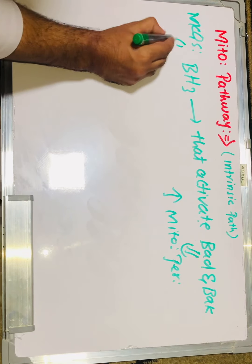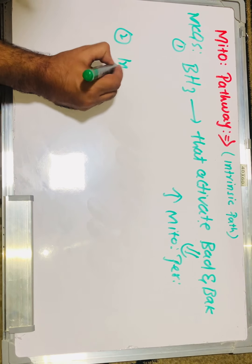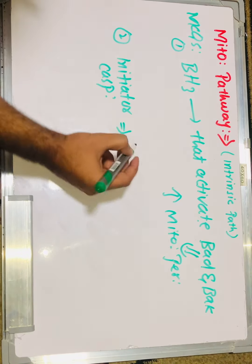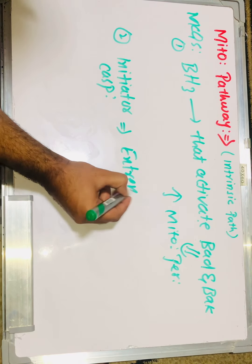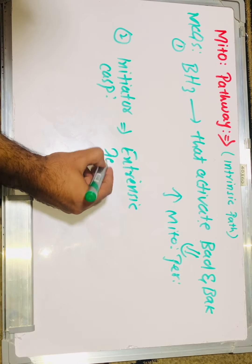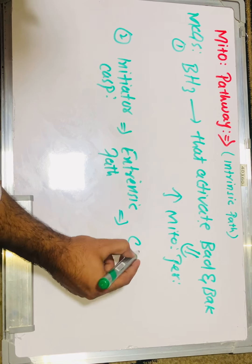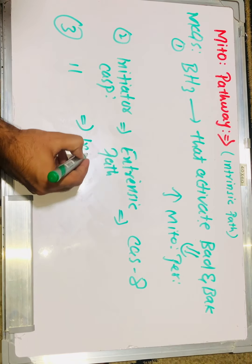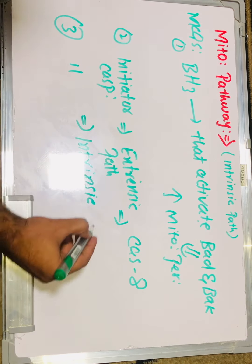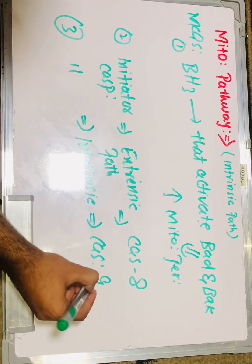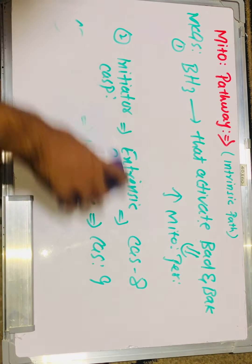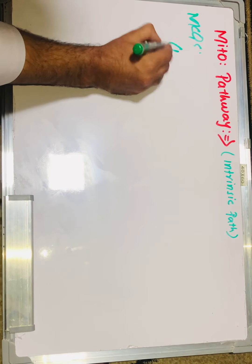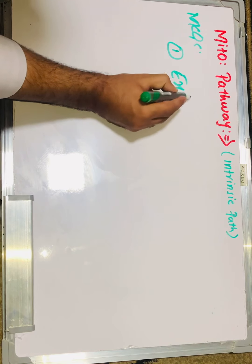For exam purposes, remember that BH3 is the only protein that activates the pro-apoptotic genes BAD and BAX, and it is also called a sensor molecule. It increases mitochondrial permeability. The initiator caspase of the extrinsic pathway or death receptor pathway is caspase 8. The initiator caspase of the intrinsic or mitochondrial pathway is caspase 9. Both caspase 8 and caspase 9 can activate the executioner caspases.